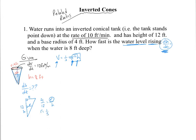Solving the ratio gives r = h/3. Substituting into the volume formula: V = (1/3)π(h/3)²·h = (1/3)π·(1/9)h²·h. Cleaning this up: V = (1/27)πh³. We've eliminated r because we only care about the change in height, not the change in radius.